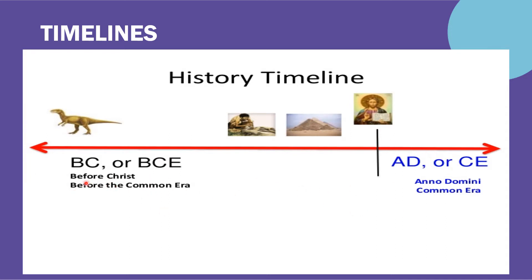BC stands for Before Christ. BCE means Before the Common Era. AD means Anno Domini and CE means Common Era. The birth of Jesus Christ is the dividing point between BC and CE.